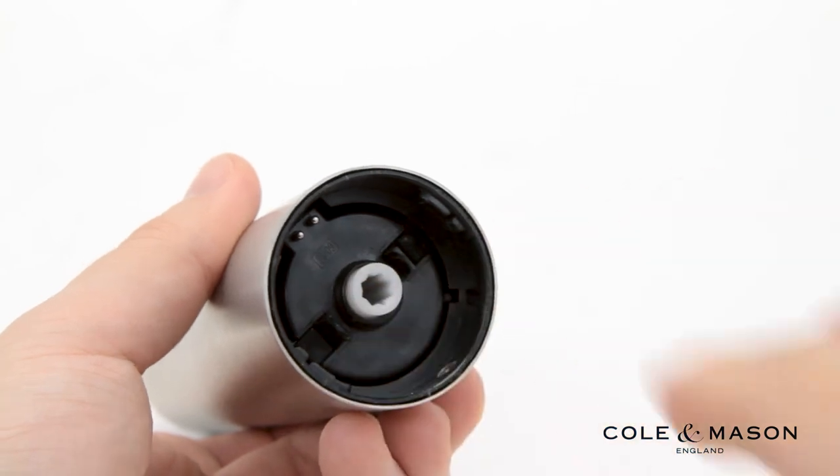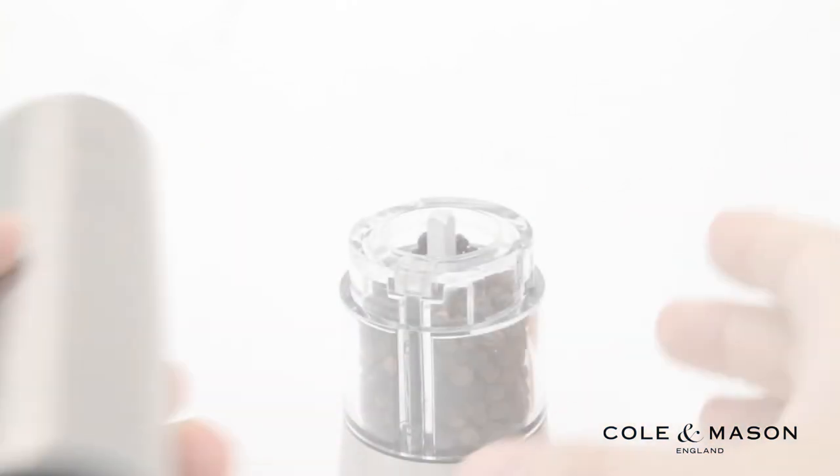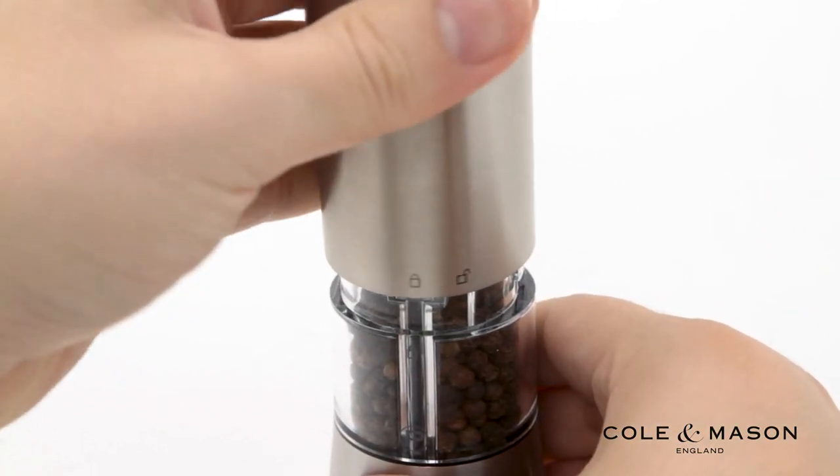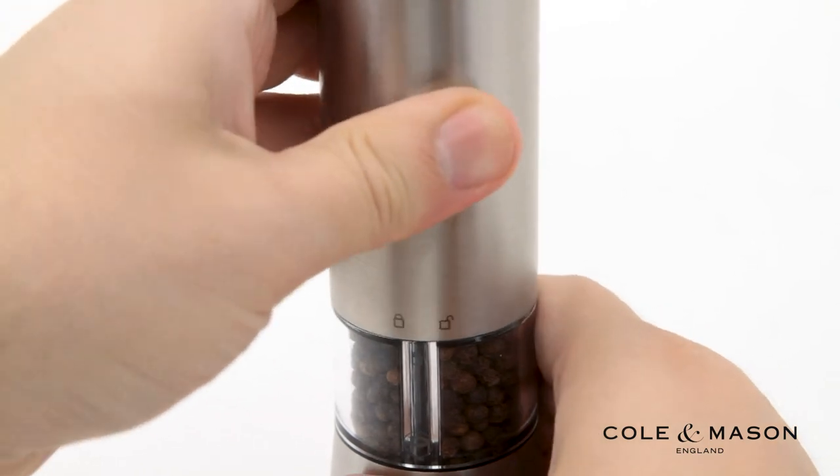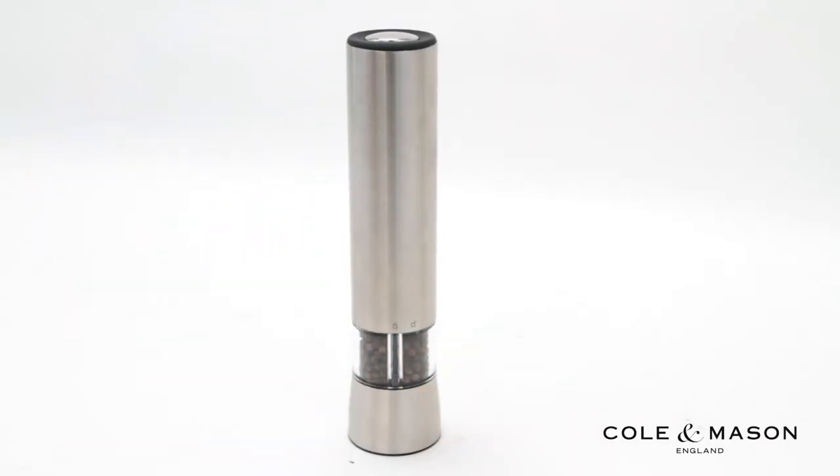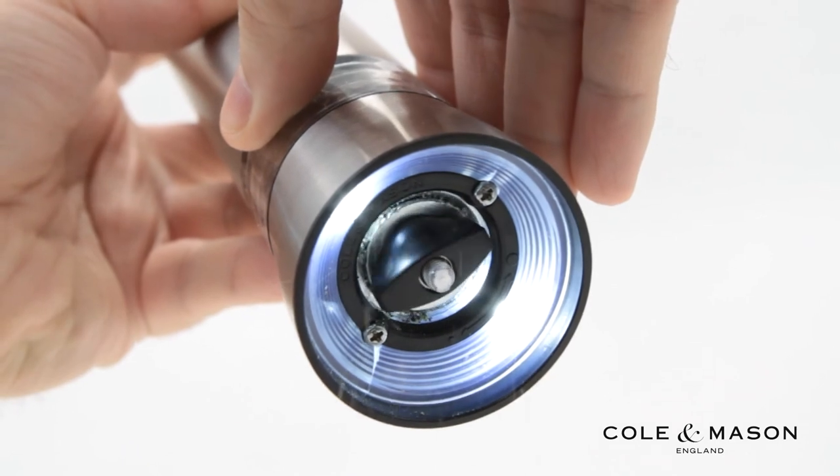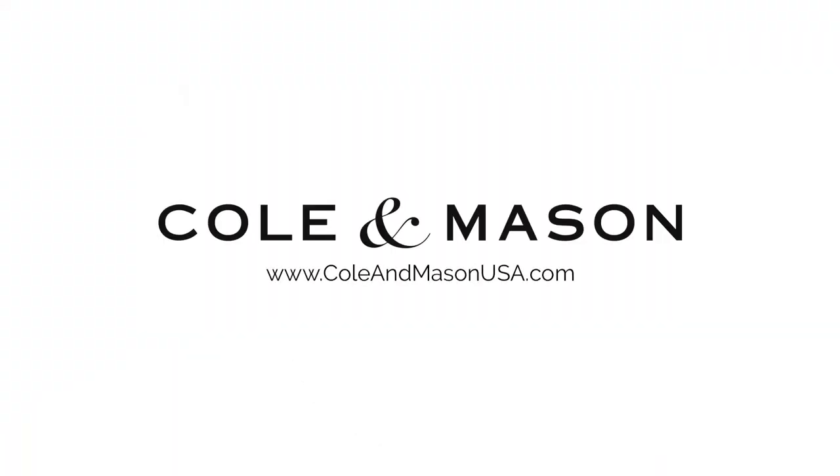Now with your batteries installed, twist the shaft back onto the base and you're ready to use your Cole & Mason Hampstead electronic mill. For more information or to purchase this product, visit www.colemasonusa.com.